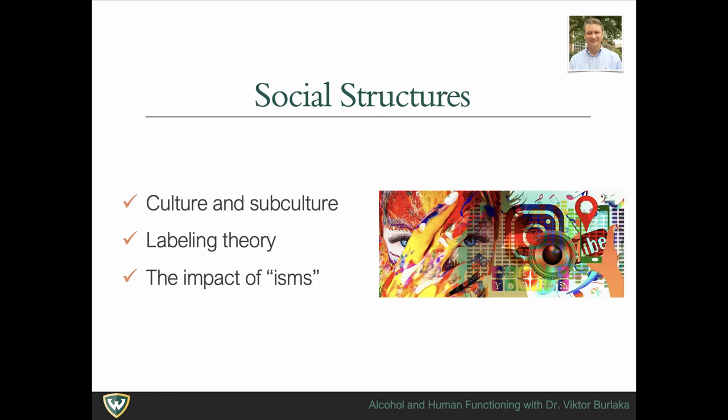The values and belief systems of different cultural groups vary greatly and influence policy. Labeling theory is a sociological term used to explain individuals' deviant behaviors as resulting from having a deviant label applied to them. According to this theory, people are influenced by the labels applied to them—for example, a person is more likely to continue drinking if they are labeled as an alcoholic.